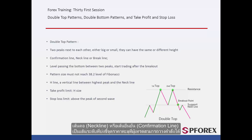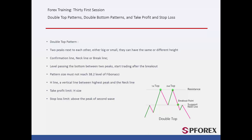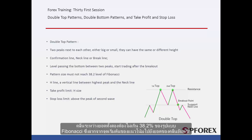The neckline, known as the confirmation line, must be a level line that specifies the breakout point where an order can be placed by a trader. The valley between two peaks must not pass the 38.2% level of the Fibonacci pattern, which should be drawn from the beginning point of the trend to the peak of the first wave.